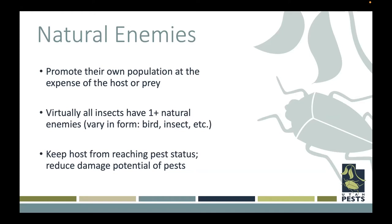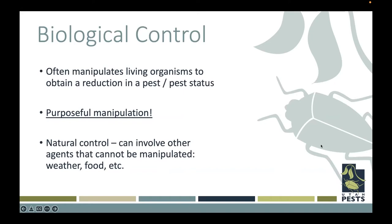Biological control means that you're manipulating a living organism to obtain a reduction in a pest, or to reduce the pest status of an insect. It's really important to note that biological control is purposeful manipulation. If it's something happening naturally in the landscape, we would call that a natural enemy. If you take a container of ladybugs and release it in your greenhouse, that is biological control because you're purposefully manipulating the population of beneficial insects. There's also a term called natural control, which includes all control measures plus things like weather, food, and other factors that can't be manipulated.